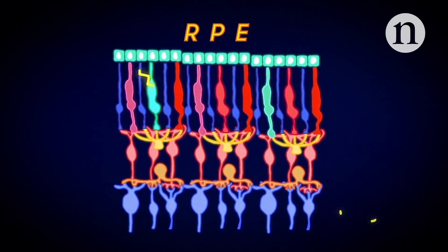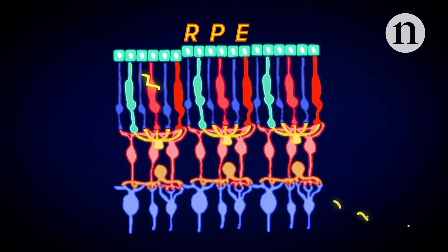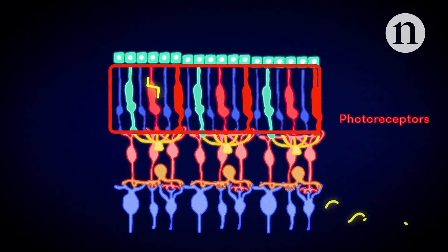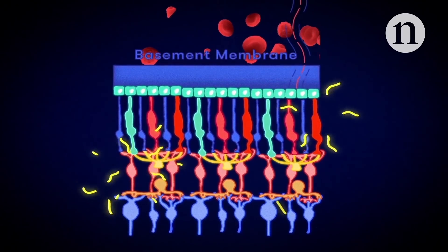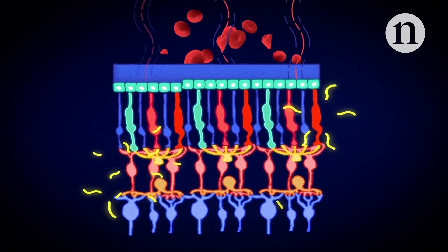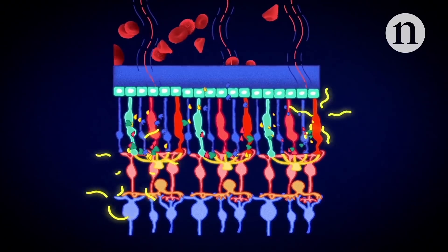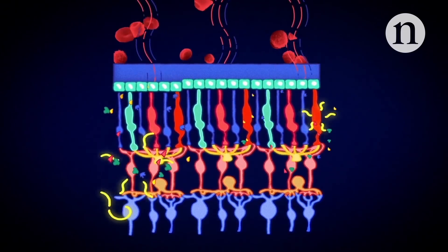The RPE forms a honeycomb structure, sandwiched tightly between the photoreceptors and a basement membrane. This RPE layer transports nutrients from the blood to the retina and hoovers up the toxic byproducts created by the photoreceptors as they react to light.